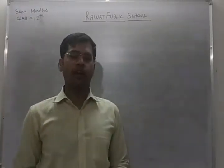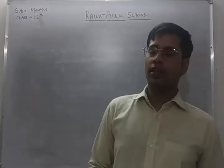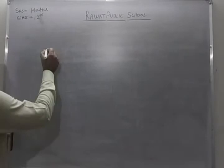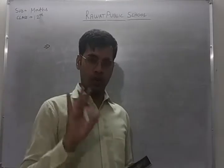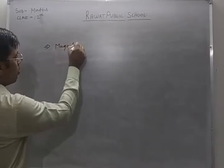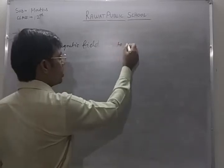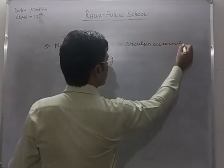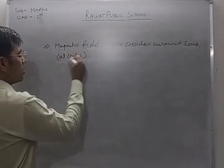Namaskar everyone, my name is Navin Yadav and I am at the physics department at Rawat Public School. In this video we will learn a topic of chapter number four, that is magnetic effect of electric current. The name of the topic is magnetic field at the center of a circular current loop — specifically, the magnetic field due to a circular current loop at its center.